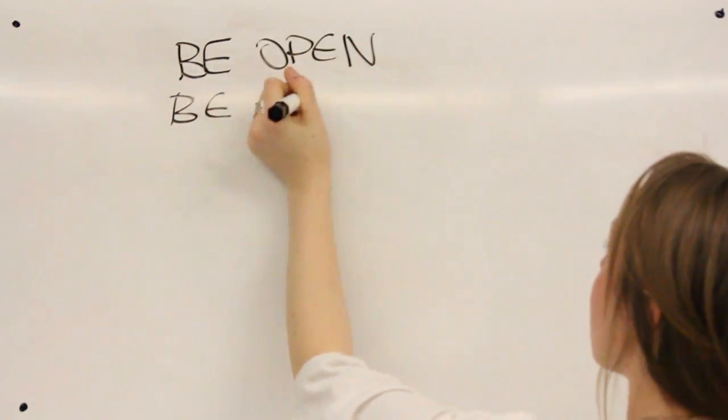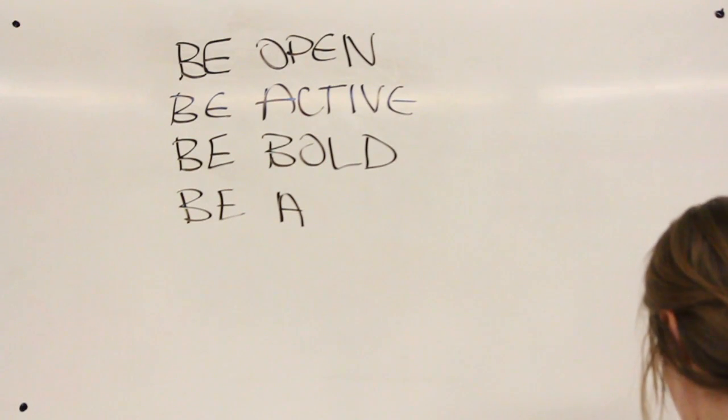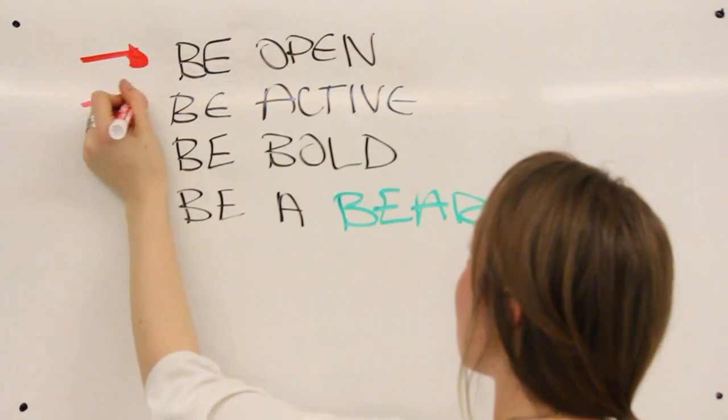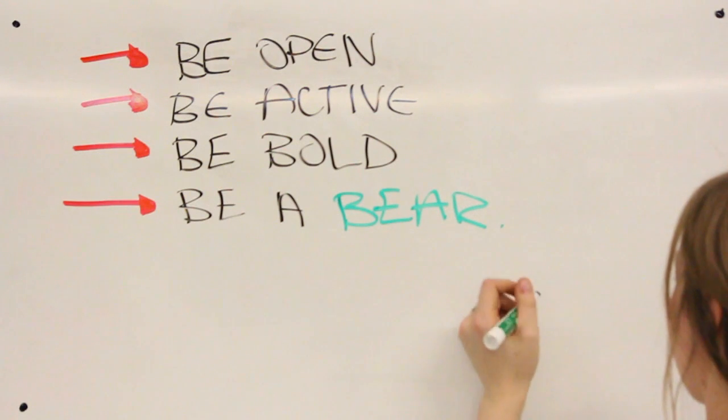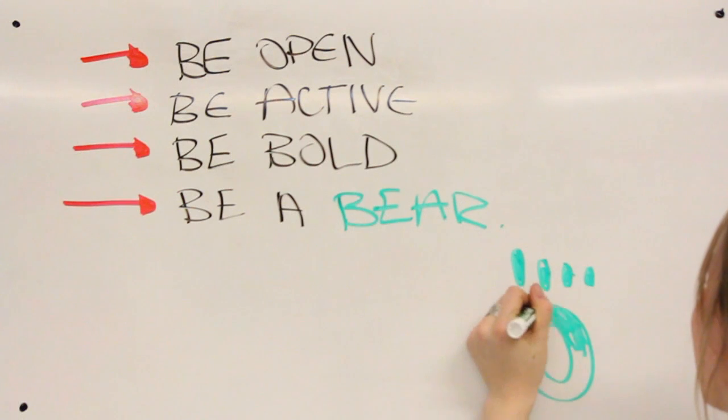We want you to have the best experience possible today. We have some expectations of you as you move through volunteer orientation. Be open, be active, be you, be bold, be a bear. Be open to learning new things and having new experiences. Be active: participate in activities, ask questions, and let us know what you like and what you didn't like.